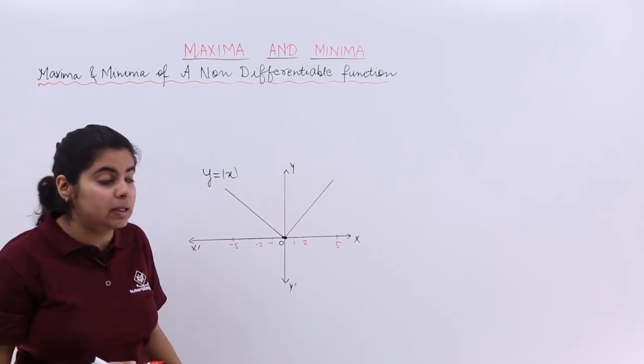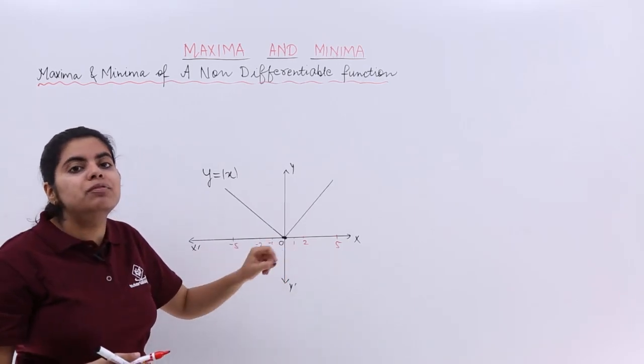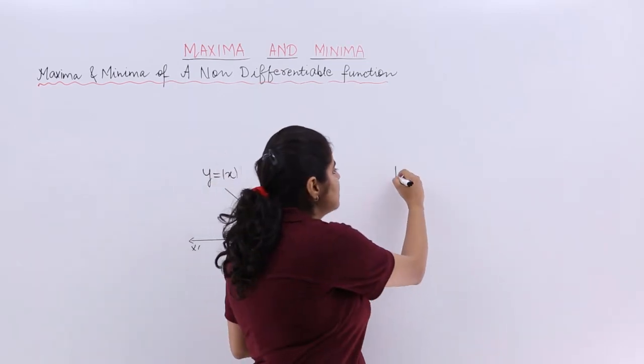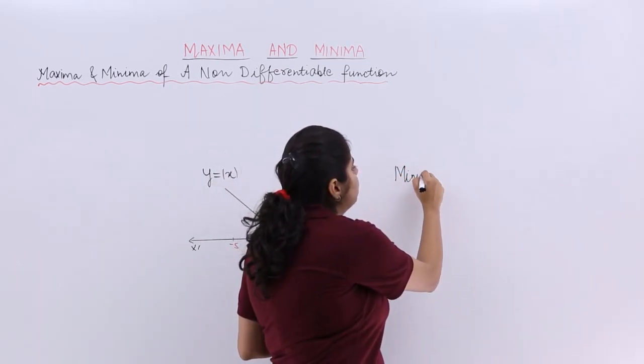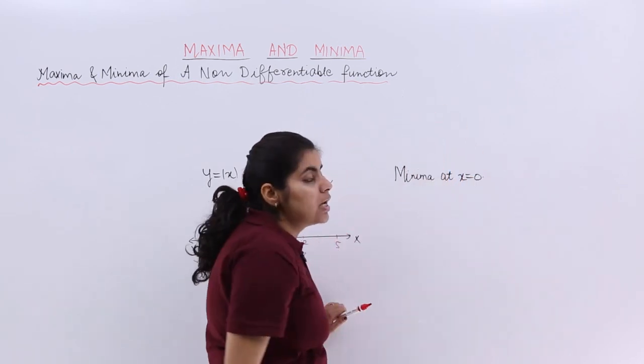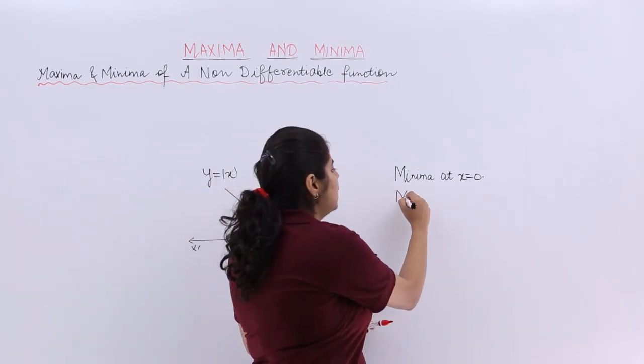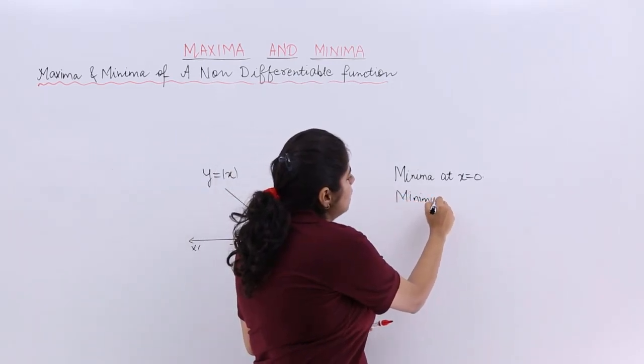But for sure I can say that yes, although my function is not differentiable, it has minima. This you have to take into picture. It has minima at x equals zero. Now if it has minima, what is the minimum value? The minimum value is this only, and the minimum value is zero only.